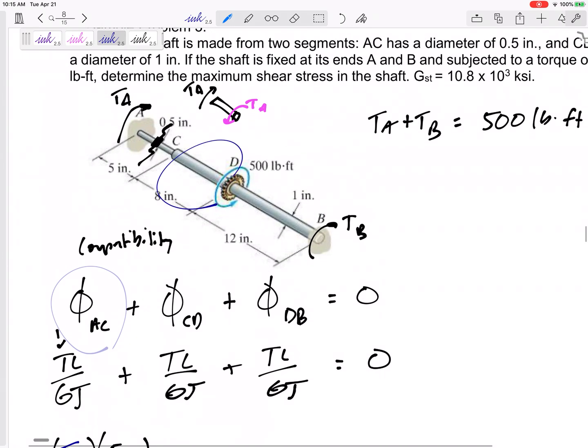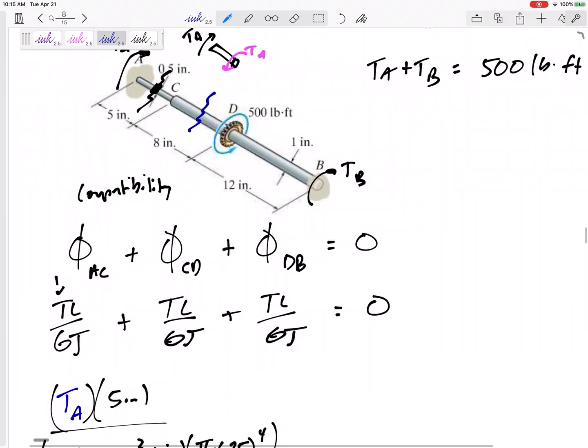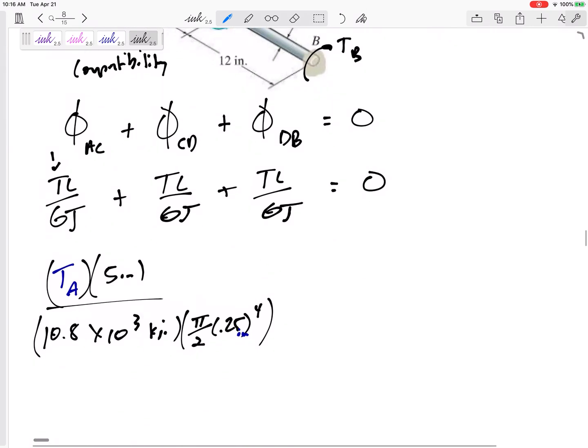Okay, that's the TL over GJ inside section AC. Let's look inside section CD. If I was to cut this inside section CD, it would look very similar to what I just drew. I'd have the TA right here, and then I would need, at this cut right here, a positive TA. So this is going to be positive. TA, its length is 8 inches, 10.8 times 10 to the 3, pi by 2 radius to the 4th. This one's radius is 0.5.